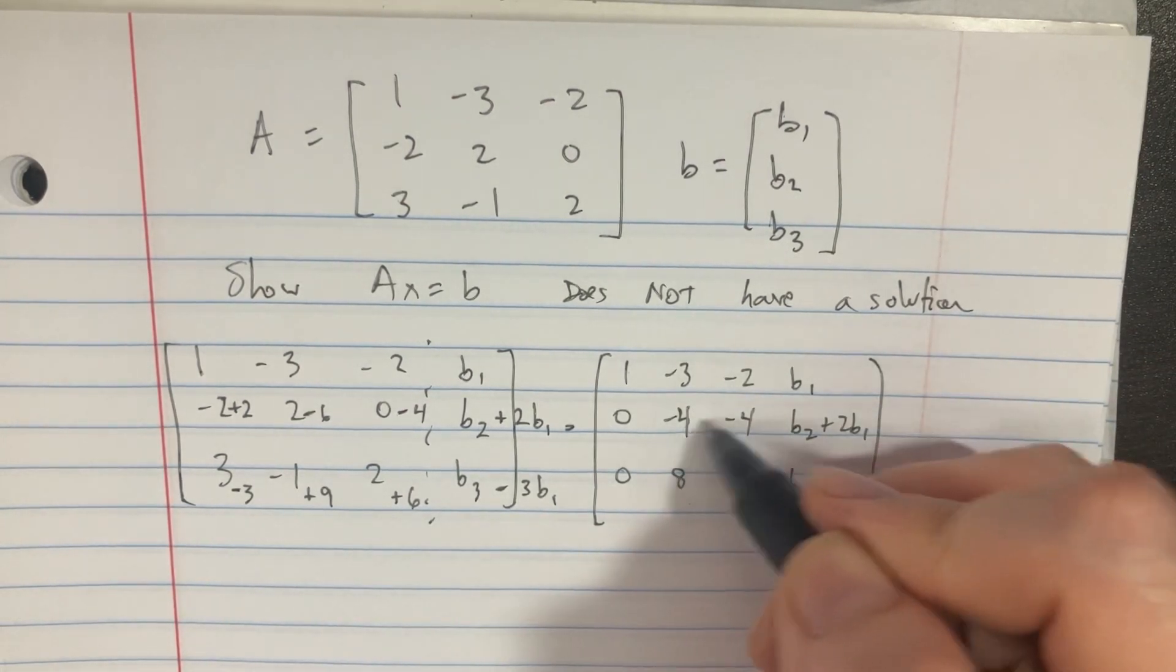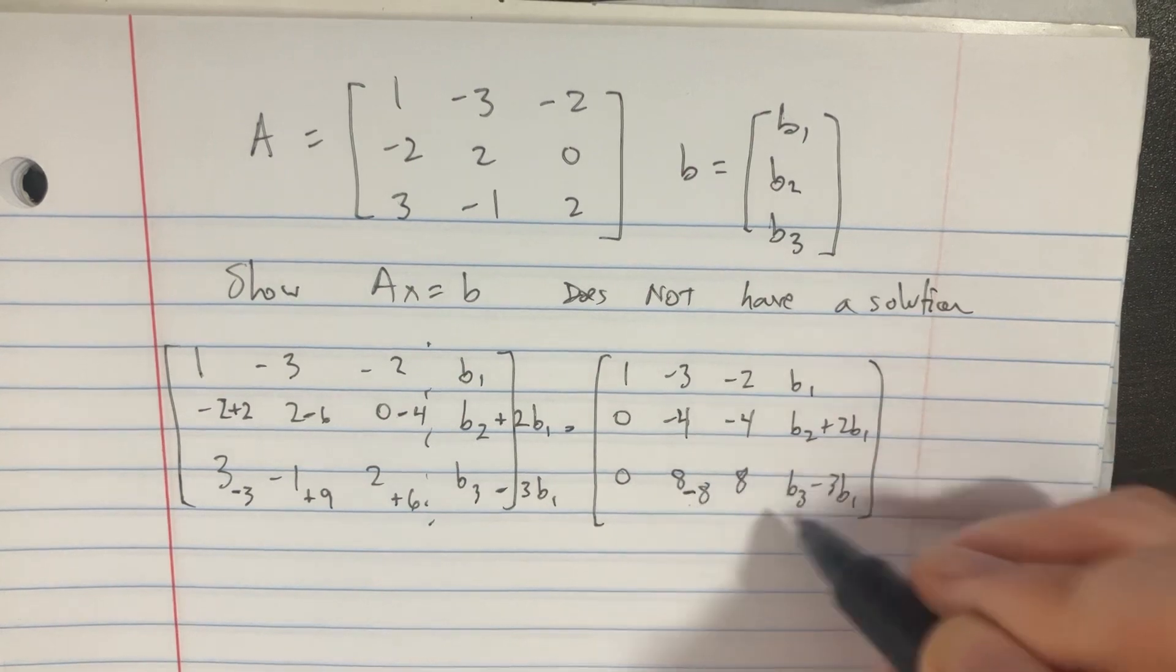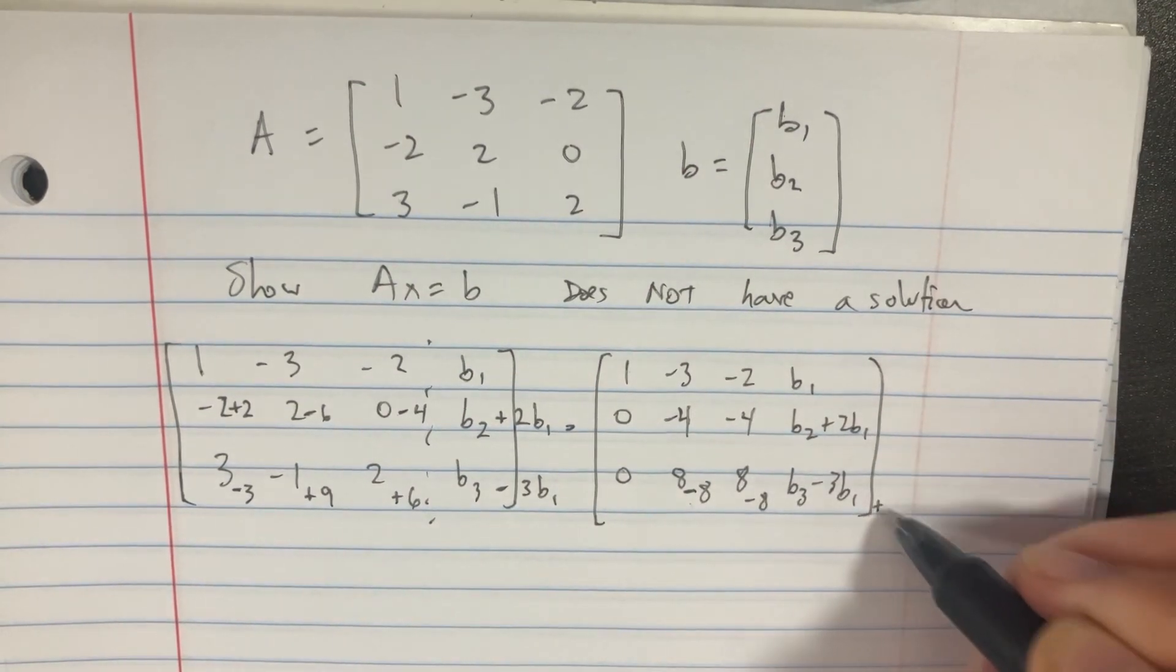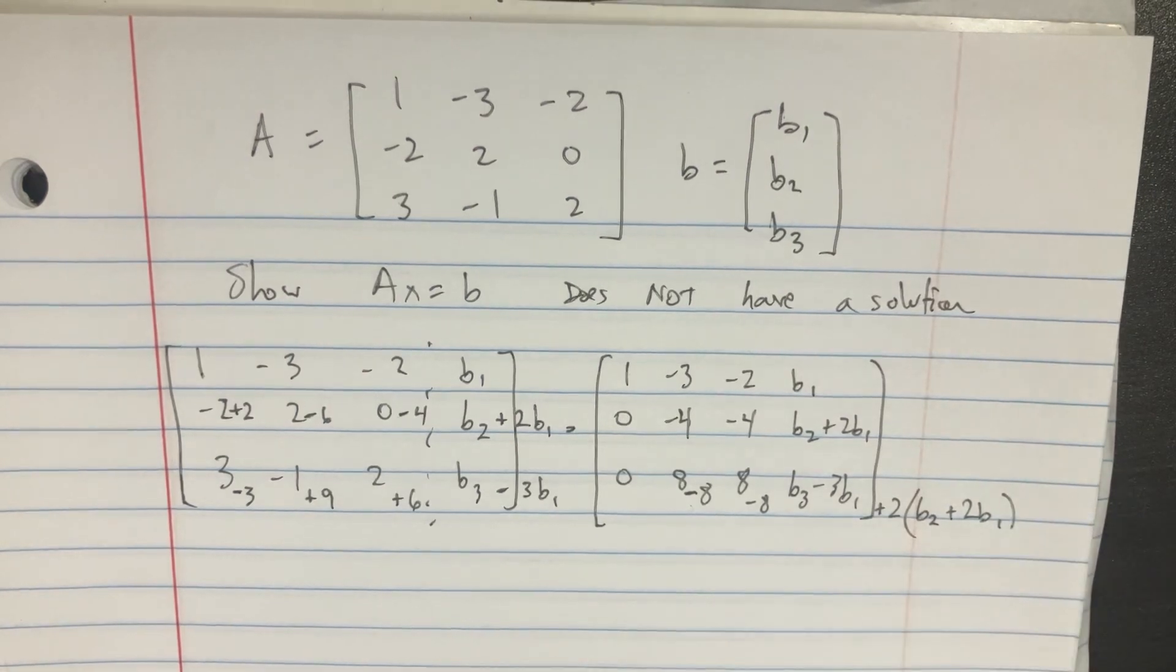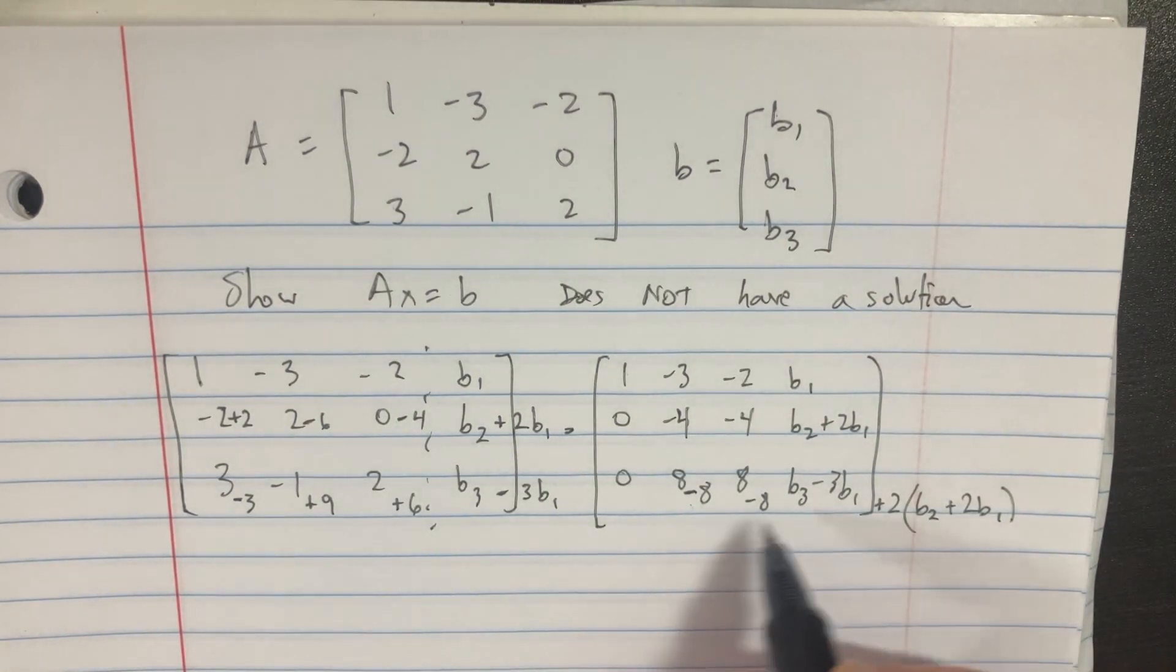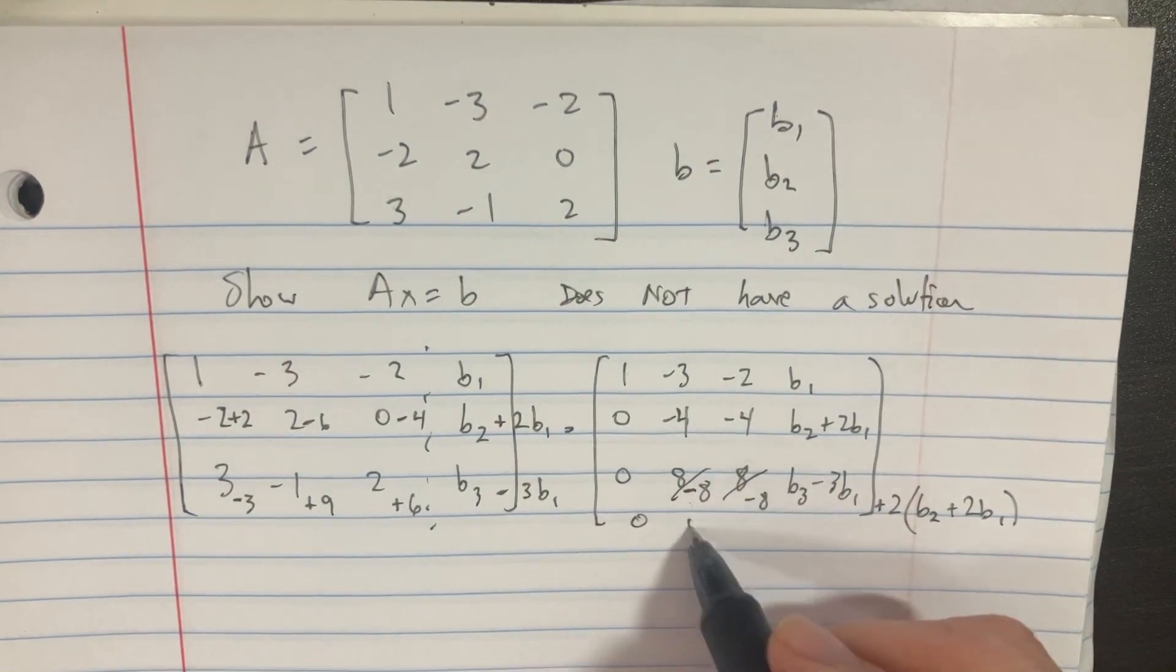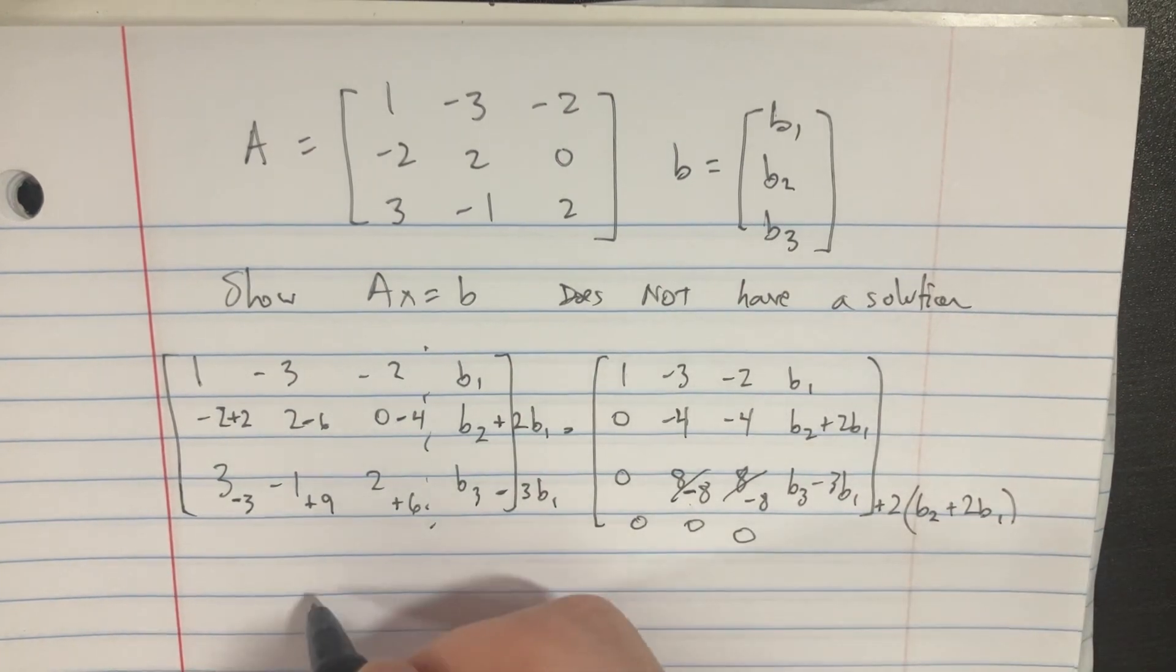So we can see that if we just multiply this row by 2 and add it here, we get minus 8 and minus 8, and then we do plus 2 times the b2 plus 2b1. And then we're going to see that this third row becomes 0, 0, 0 equals that.